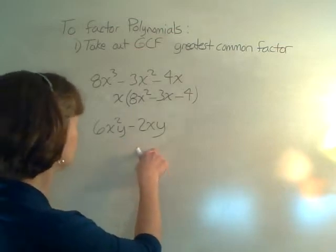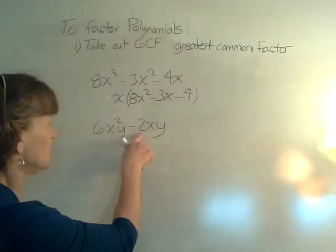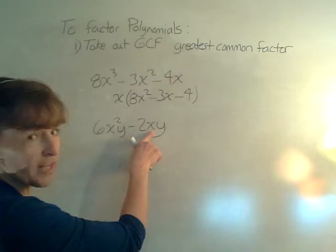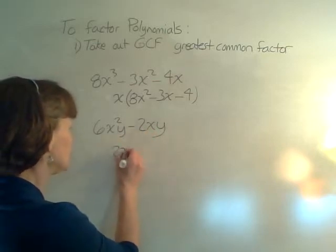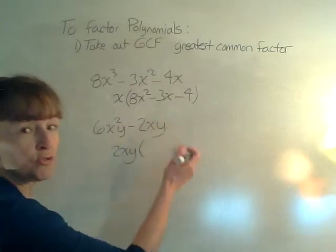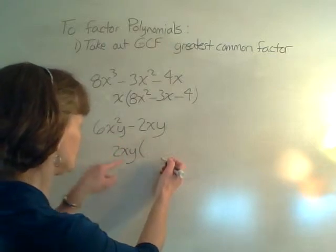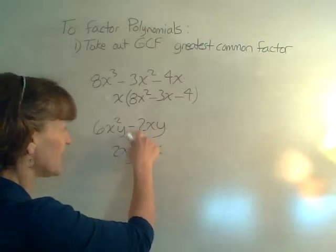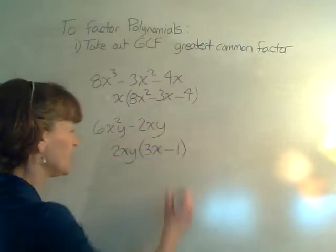With my other example, both of these numbers have a 2 in common. Each term has at least one x and one y. So I can pull out a 2xy, factoring out the 2xy. When I divide 6x²y by 2xy, I get 3x. When I divide -2xy by 2xy, I get -1.